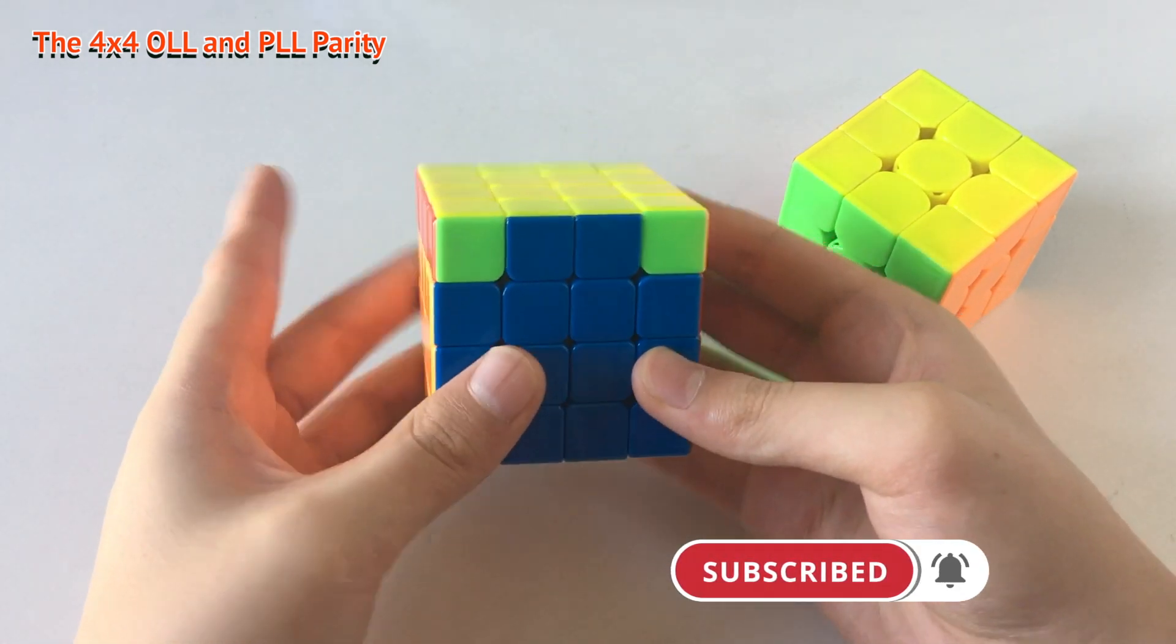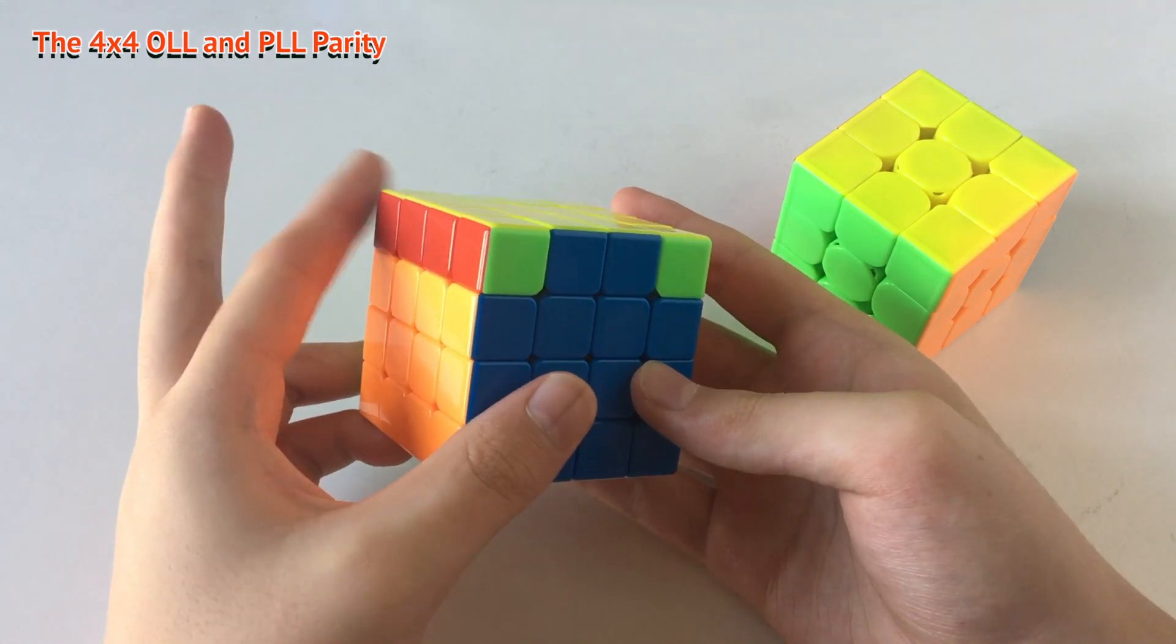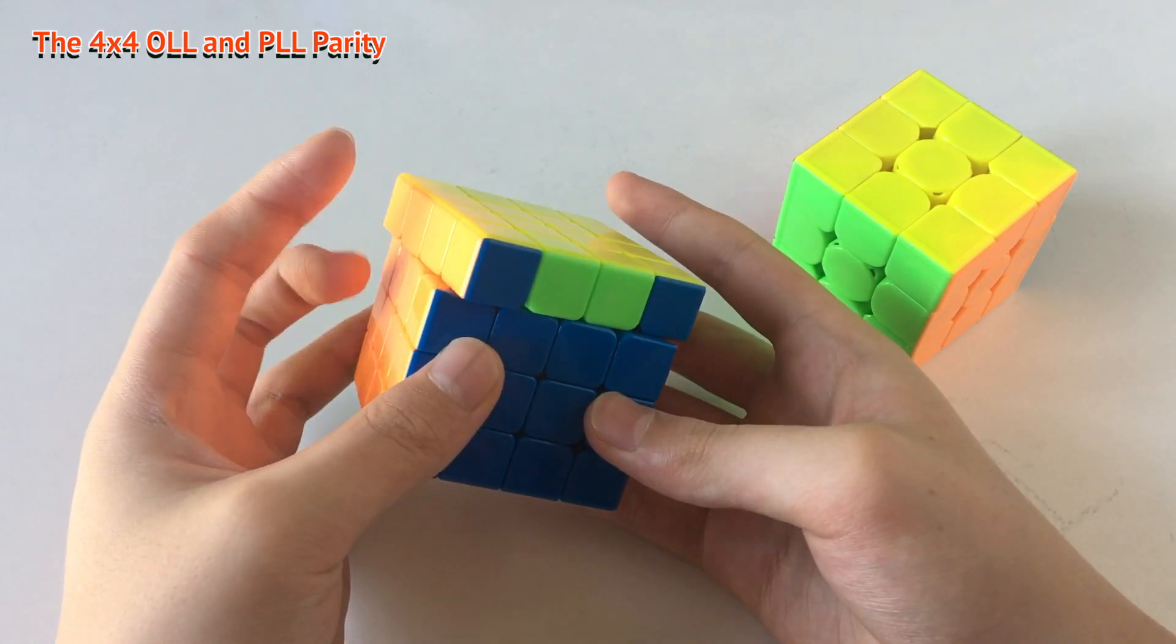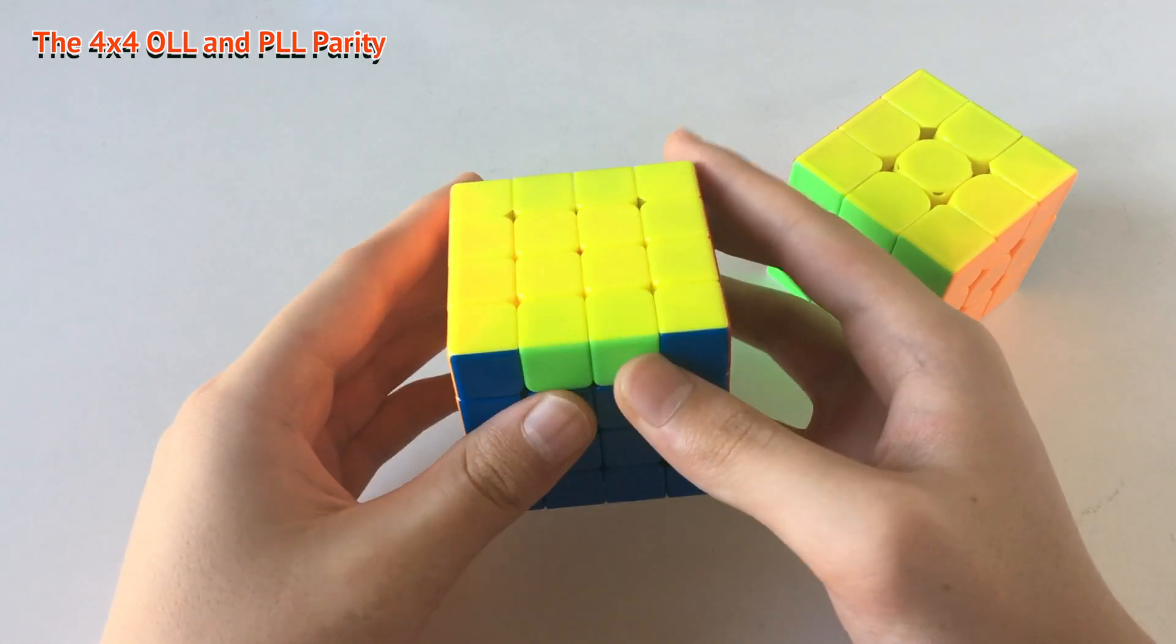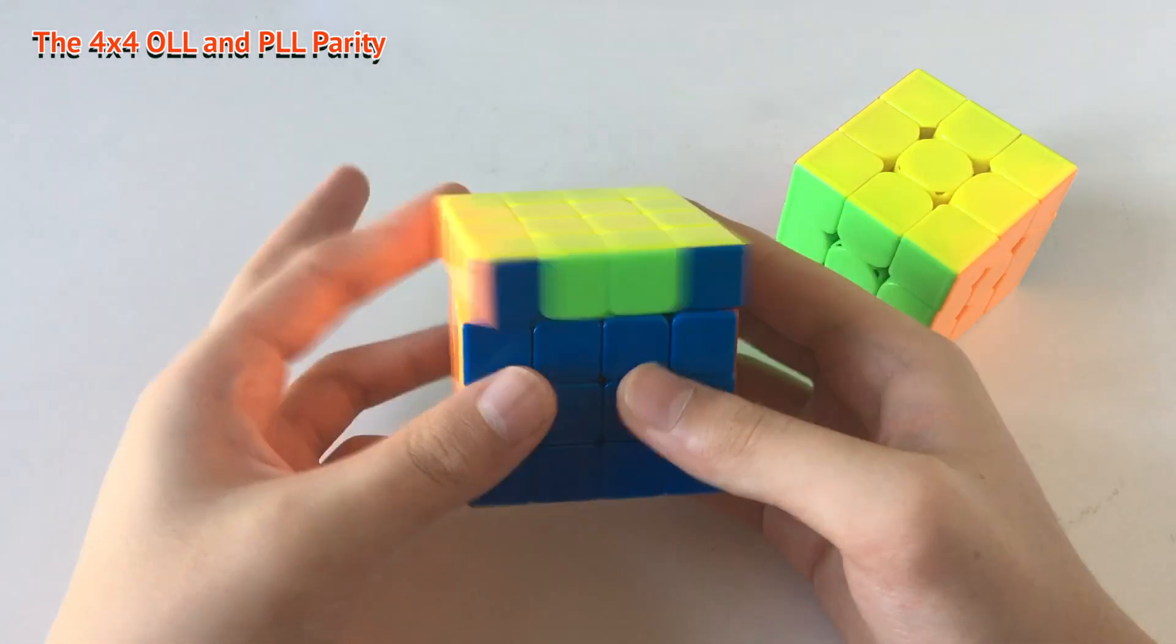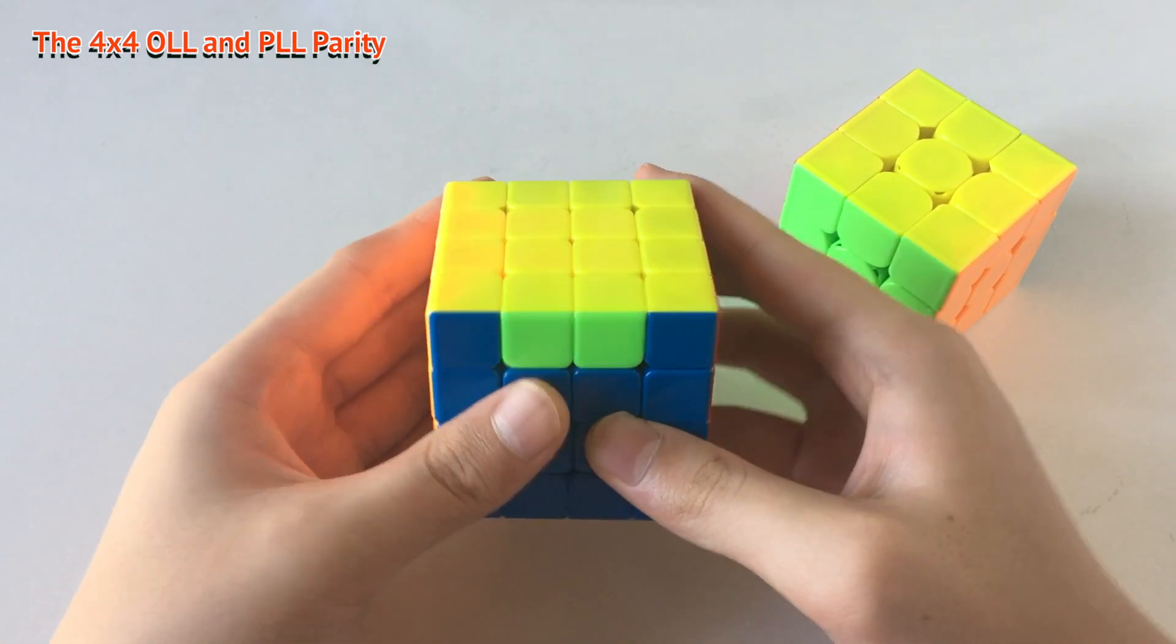And then for the last part, you want to use your left index finger and your middle finger to do the U prime move from the left side.